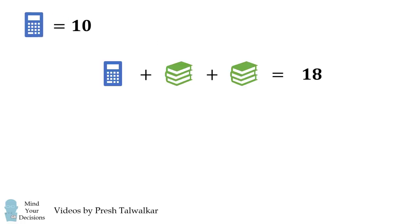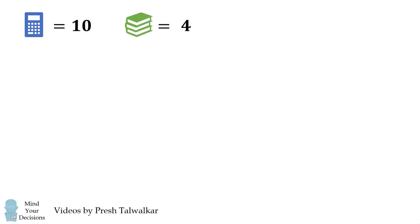The second equation will have 10 plus 2 books will be equal to 18. This means that two of these books will be equal to 8, or one set of books is equal to 4. So far, there's no disagreement.